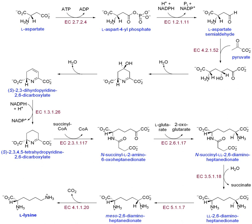The glutamate family of amino acids includes amino acids derived from glutamate: glutamate, glutamine, proline, and arginine — and also lysine, which is derived from alpha-ketoglutarate. The biosynthesis of glutamate and glutamine is a key step in nitrogen assimilation, catalyzed by GOGAT and GDH. In bacteria, glutamate 5-kinase initiates proline biosynthesis by transferring a phosphate group from ATP onto glutamate. Pyrroline-5-carboxylate synthase (P5CS) then catalyzes the reduction of the gamma-carboxyl group of L-glutamate-5-phosphate, resulting in glutamate semialdehyde, which spontaneously cyclizes to pyrroline-5-carboxylate.